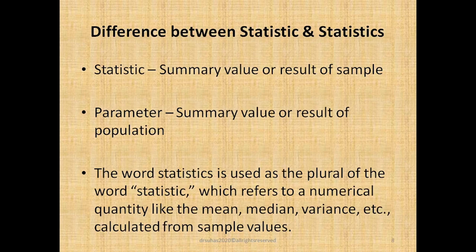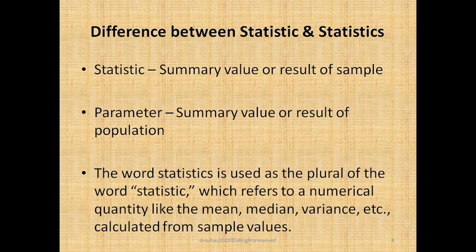It is very important that the sample should be as close to the population as possible, though it has a few challenges. The word 'sample' refers to a part of the population. Coming to the word 'statistic' — a statistic is a summary value or the result of a sample. Whereas the summary value or result obtained in terms of the population is called a parameter. So statistic is a summary value of sample, and parameter is the summary value of population. The word 'statistics' is used as a plural of 'statistic', which refers to numerical quantities such as mean, median, variance, etc., calculated from sample values.